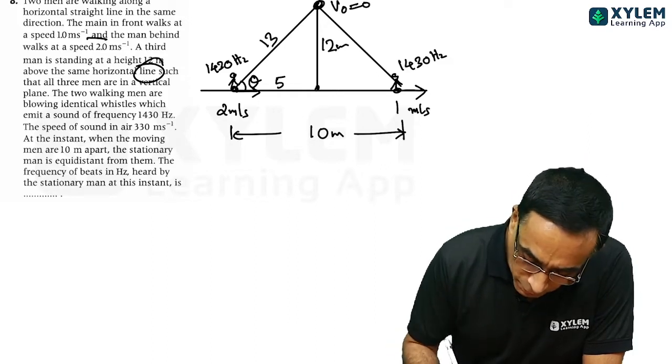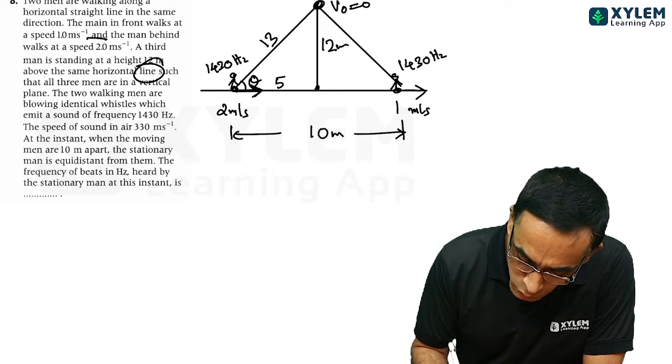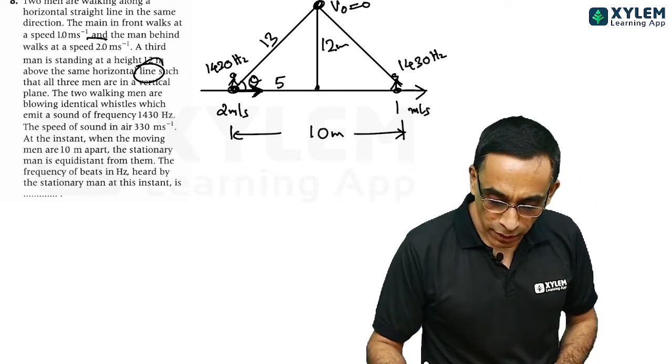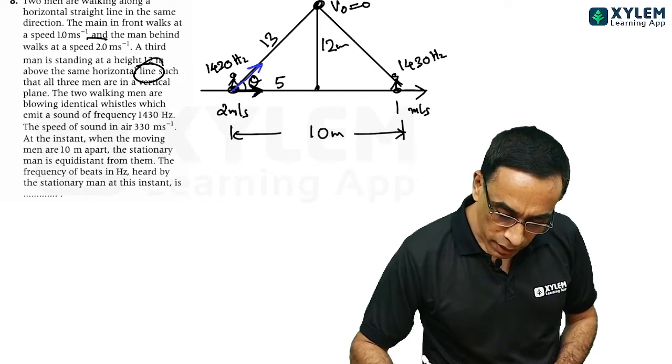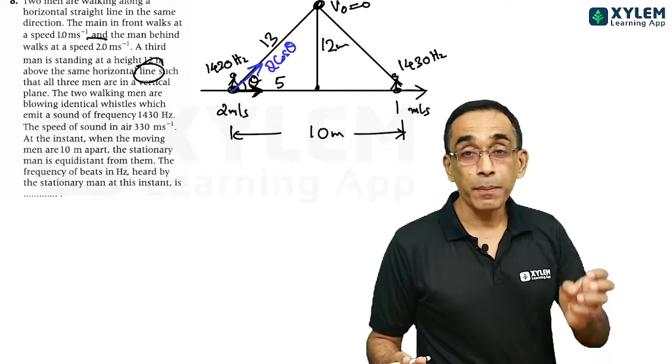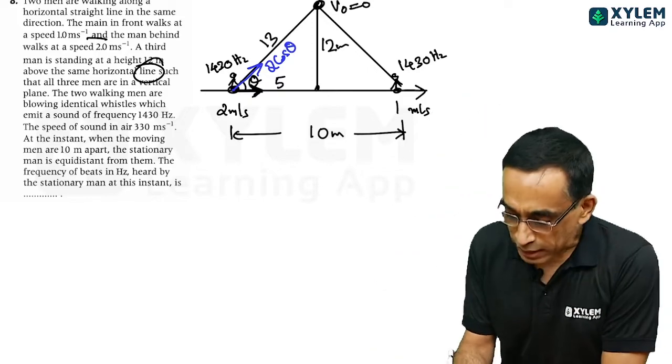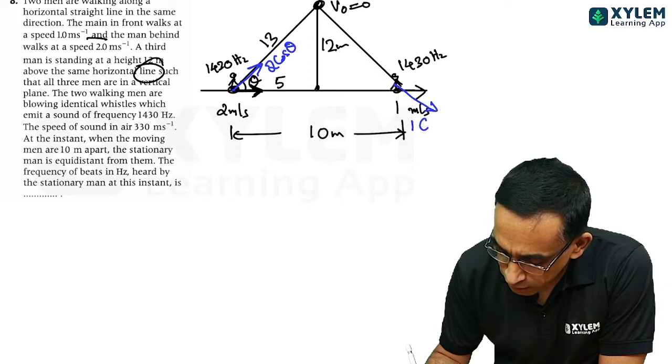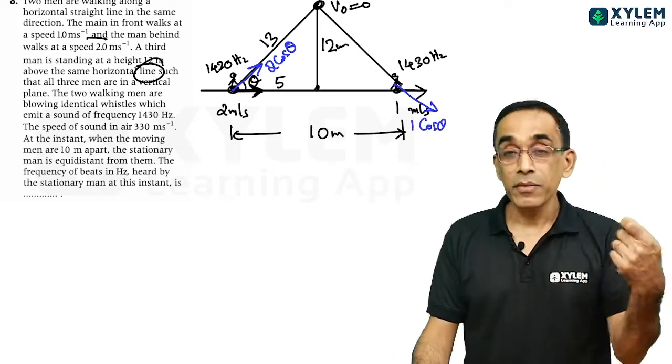Either on observer. Observer Rastilan. V observer 0. But the velocity of the source is not along the line joining. So we have to go for the component here. This component will be 2 cos theta. And that is approaching the observer. Similarly, the component here will be in this direction. It will become 1 cos theta. But that is leaving the observer.